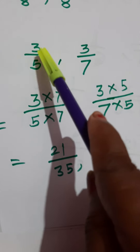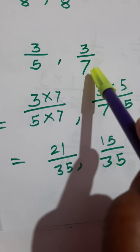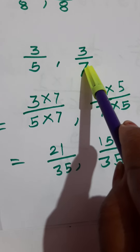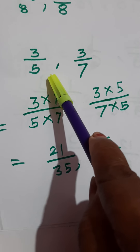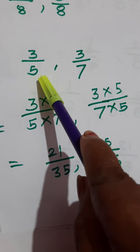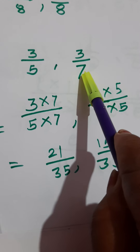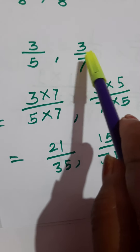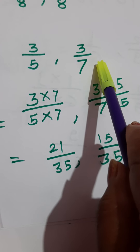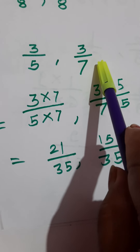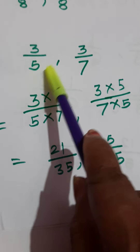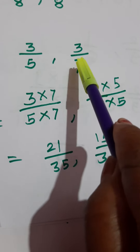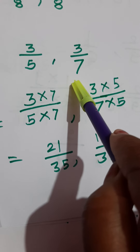Now here see 3 upon 5 and 3 upon 7. We want to convert these unlike fractions into like fractions — means we want to make their denominators equal. In a first example we have seen 4 and 8, they are from the same table, so we handled it that way. But here 5 and 7 are both not from the same table. They are prime numbers — in such cases, what to do?